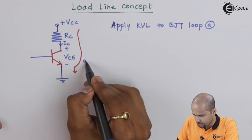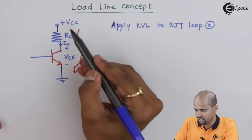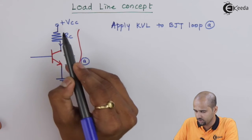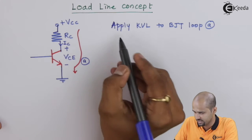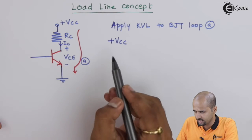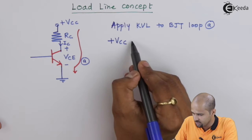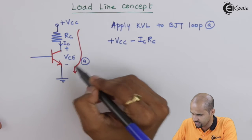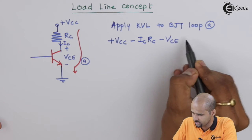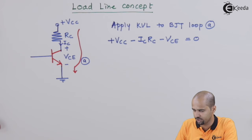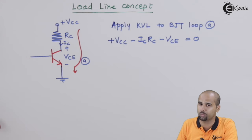We will do the normal current analysis for this loop as loop number A. We are starting from plus VCC with respect to ground. So plus VCC, minus the voltage drop across RC which is given by current IC times RC, so minus IC·RC, then minus VCE is equal to zero. From this simple equation we will extract the characteristic parameters related to the output characteristics.